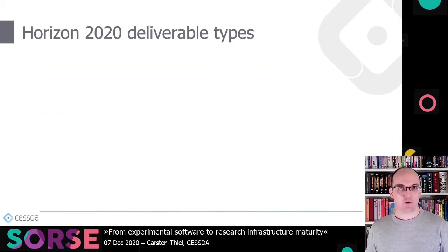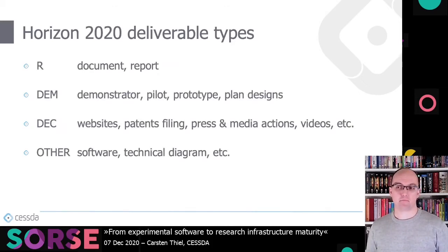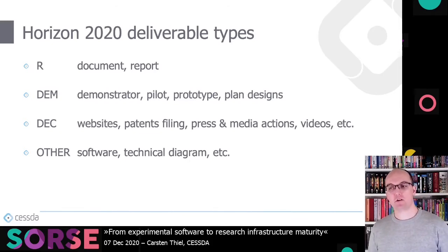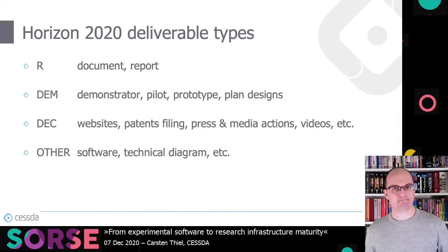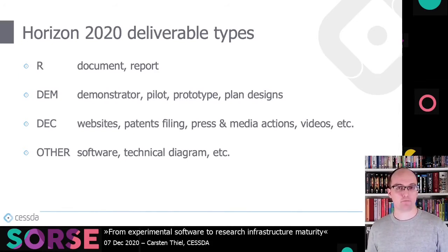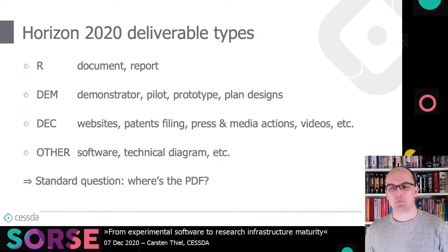Let's have another look at Horizon 2020 and its deliverable types. You have documents and reports, demonstrators, websites and press filings, and then the 'other' category — which includes software. So software is something that is 'other' in the terms of the European Commission when it comes to output of European funding for research. Whenever you try to submit one of those deliverables, the generic question you get is: where's the PDF?